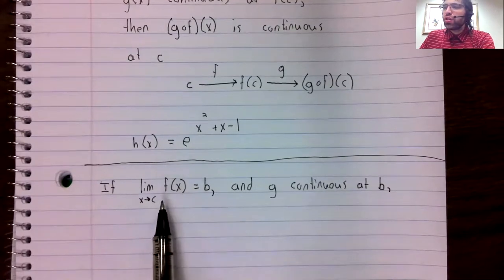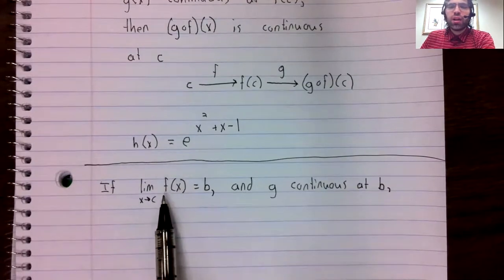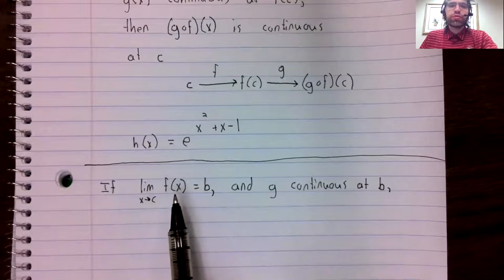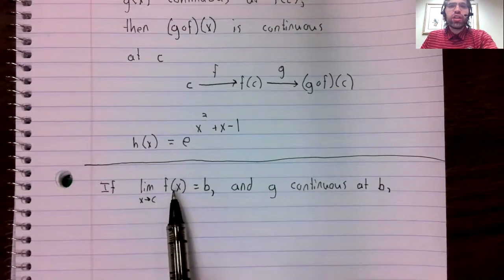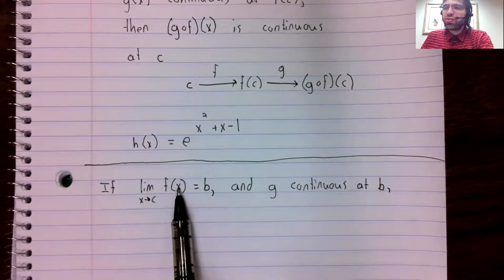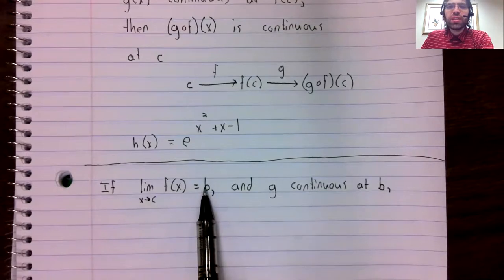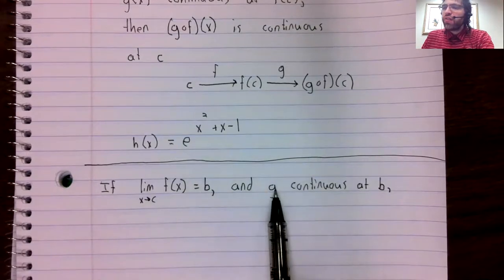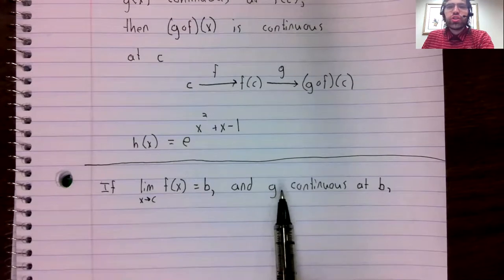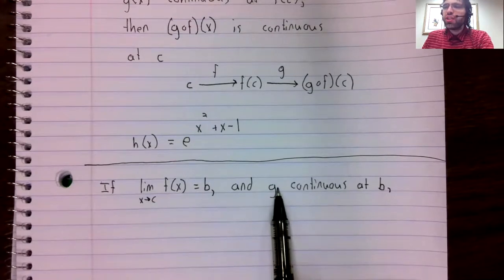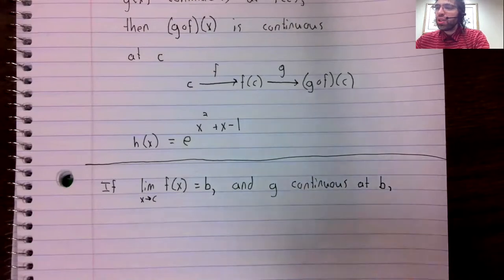So suppose we've got a limit as x approaches c of a function f(x), it's equal to b. And we've got another function g that is continuous at b.